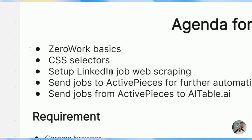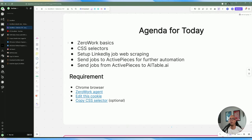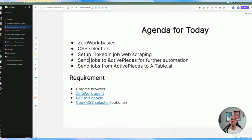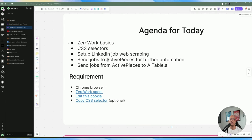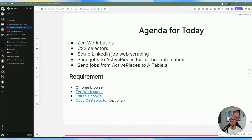We're going to be extracting job title, company information, and job details so we can do further automation like writing a cover letter using AI, as I did in my previous video. Then we're going to be sending those jobs to ActivePieces for further automation. Anything we scrape within ZeroWork we'll send to ActivePieces, and after that we'll send all those jobs from ActivePieces to Airtable, where we'll be storing all the jobs for reference.